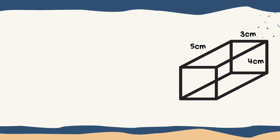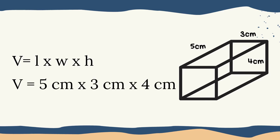So example naman natin ito ay a rectangular prism. Kung ang rectangular prism ay may formula na length times the width times the height, so ilagay natin ang mga number na given. So 5 cm times 3 cm times 4 cm. 5 times 3 equals 15, times 4 equals 60. Then the unit of centimeters — since may tatlo tayo, ang volume natin, ang unit dapat cube. So 60 cubic centimeters.